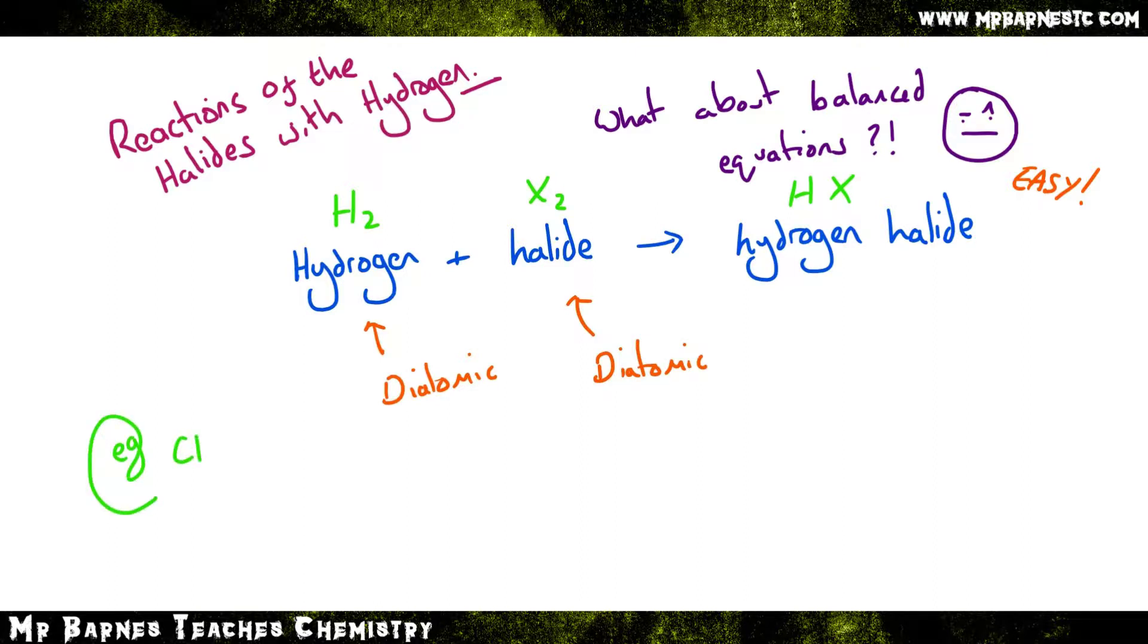So if we have a look at an example, let's go with chlorine again. As I've said, hydrogen is diatomic H2, chlorine Cl2, and you just get one of each for your hydrogen halide, so hydrogen chloride is HCl. You then need to balance. I've got two hydrogens and two chlorines on the left and I've only got one of each on the right. So if I put a two in front, it becomes balanced.